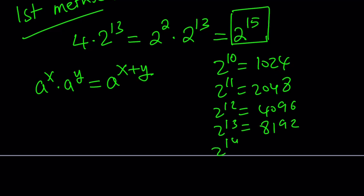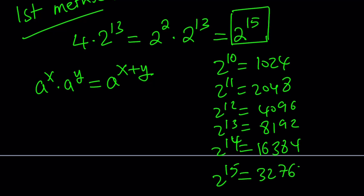2 to the power 14, you're just going to double this. And finally, to find 2 to the power 15, you're also going to be doubling this and finding 32,768 as the answer.